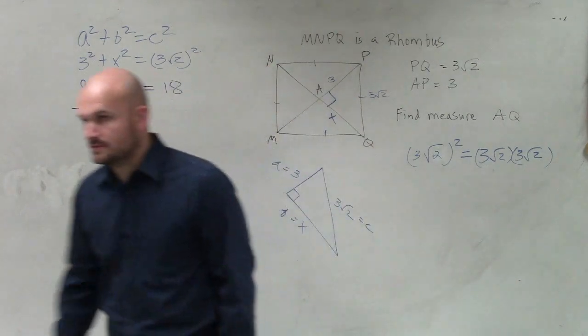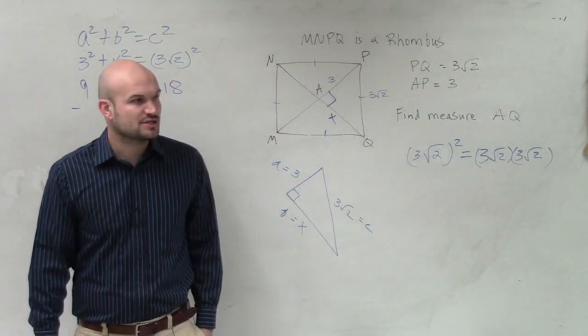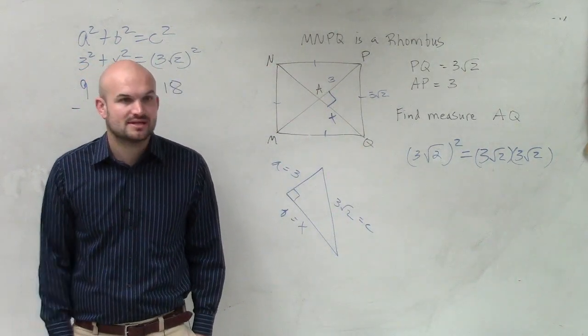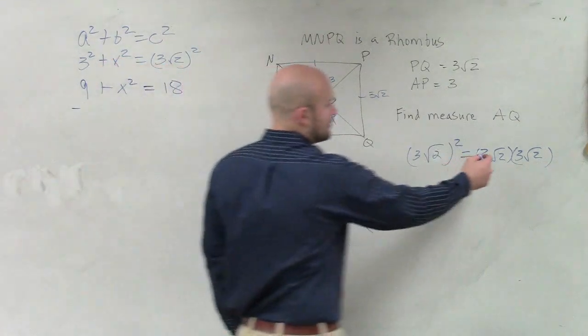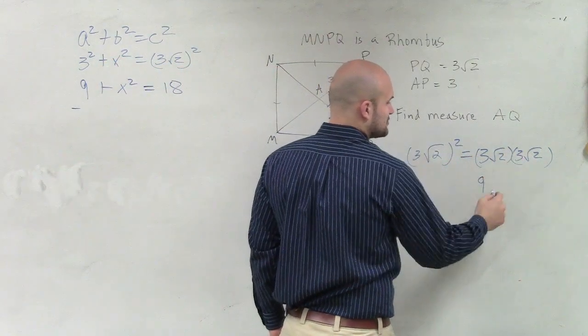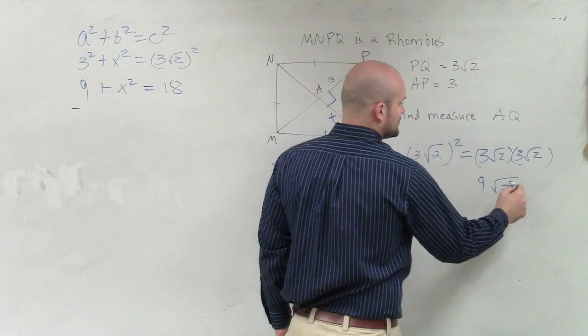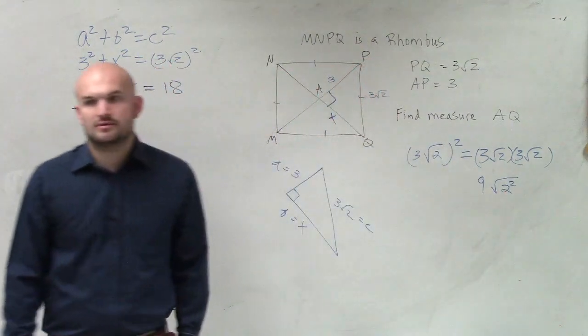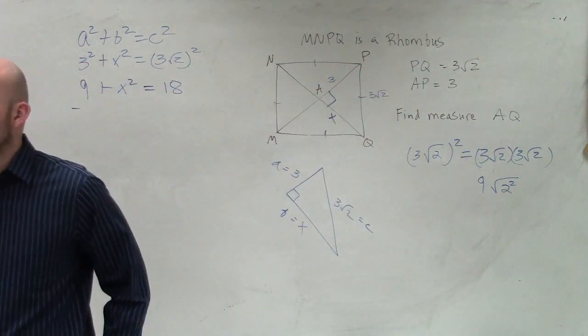Would you agree? Do you guys agree that something squared means that multiplied by itself? 3 times 3 is 9. Square root of 2 times square root of 2 equals the square root of 2 squared.